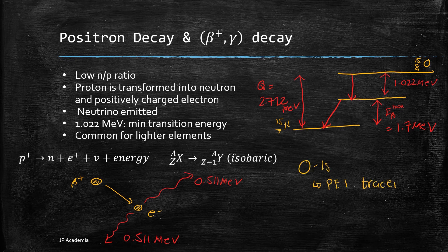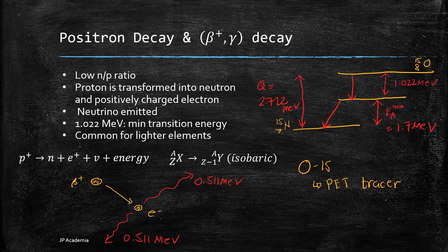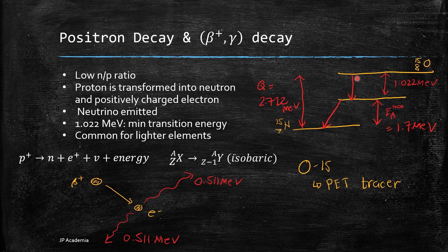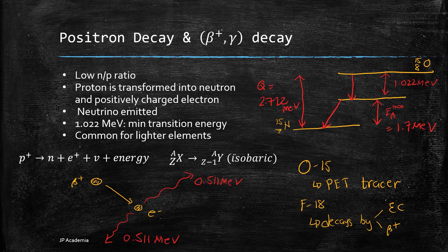We have here the decay scheme of oxygen-15, a beta plus emitter used as a tracer in measurement of regional blood volume and flow and oxygen metabolism for PET scan. Shown is the minimum transition energy for beta plus and the remaining energy is shared by the daughter and neutrino. We also have fluorine-18 which is used for PET imaging that decays by both electron capture and beta plus emission competitively.